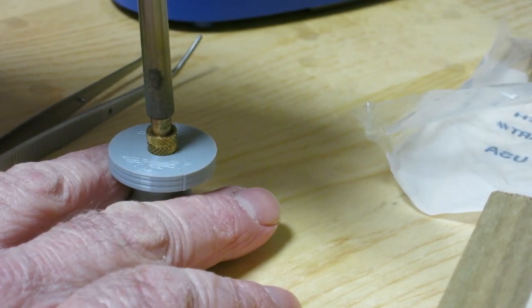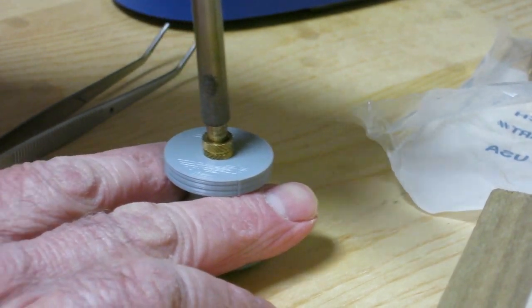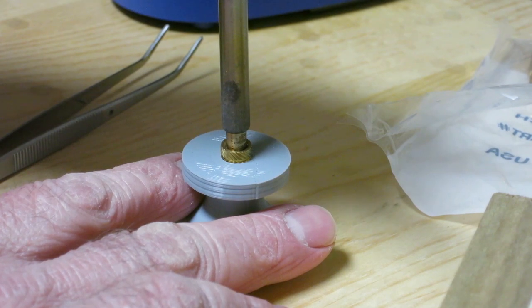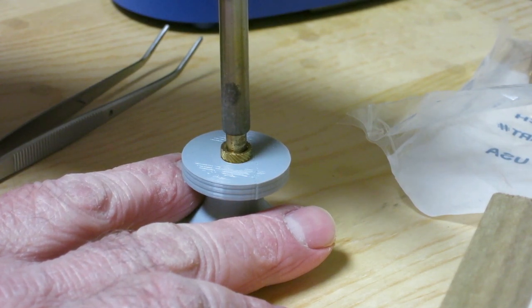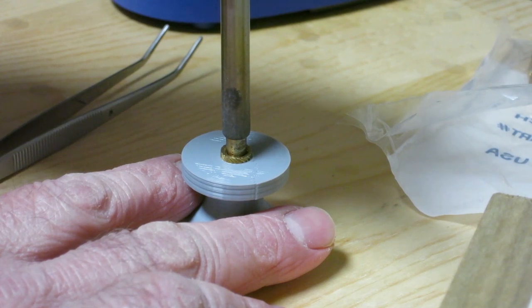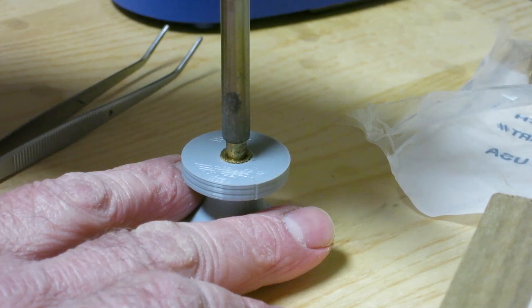You can see I'm pushing that in with just a little bit of force, not much at all, and it's slowly melting into the knob. What I'm looking for is keeping it upright as I go, but also waiting for it to get down far enough that it's just below the surface.